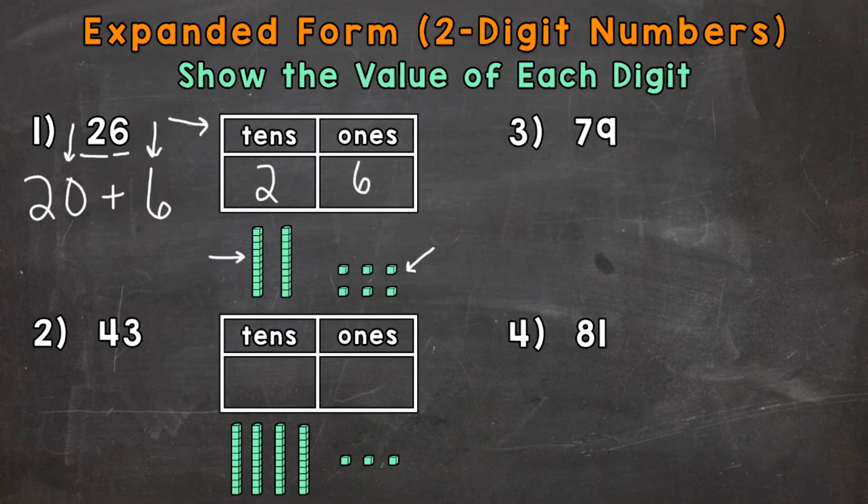Let's try another one. Number 2, we have 43. So we have 4 groups of 10, which has a value of 40. So we have 4 groups of 10 there represented with the place value blocks, which would be 40. And then we have 3 ones.